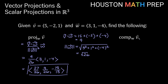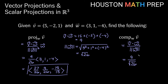For the scalar projection of V onto W, we use the dot product divided by the magnitude of W. We already have V dot W = 9 and |W| = √26, so the scalar projection is 9/√26. Rationalizing, that equals 9√26/26.